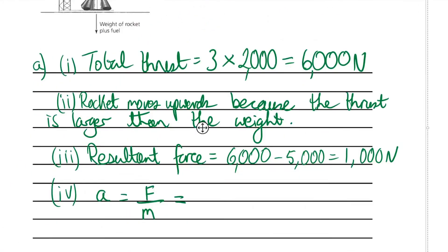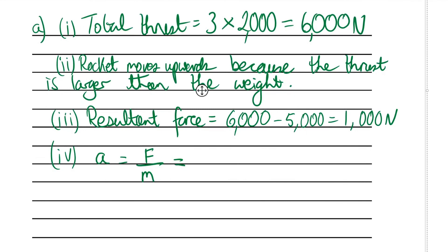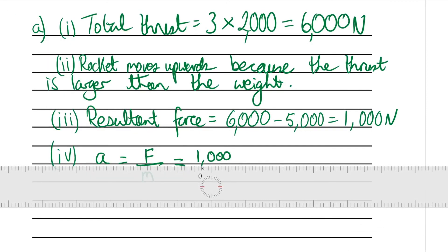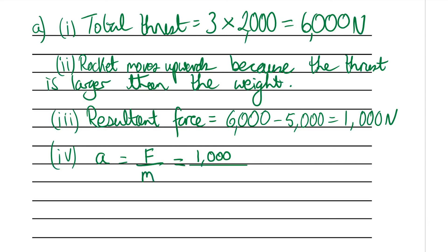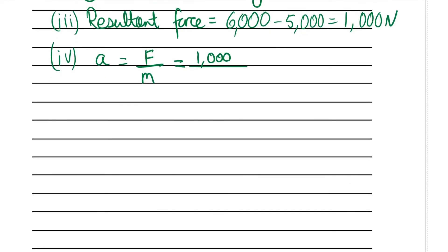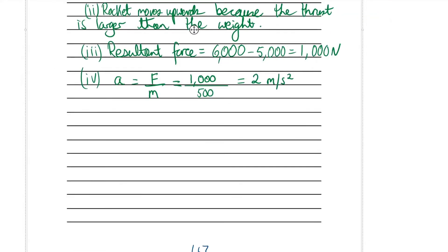Very similar to the previous question we just looked at. Use the resultant force which is 1,000, find out what the mass is. So we'd look above, find out what's the value of the mass. 1,000 over 500 is 2, and remember the correct units again: meters per second squared. There we have it.